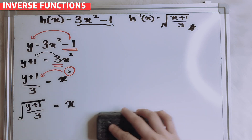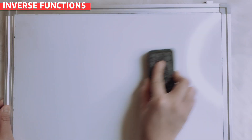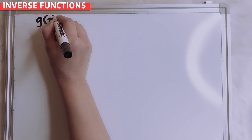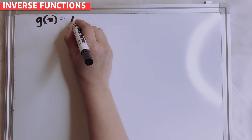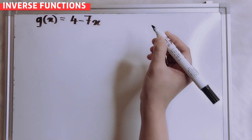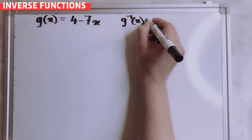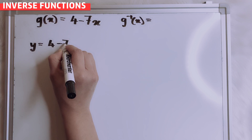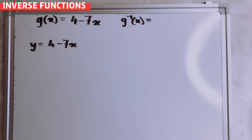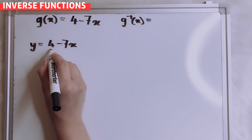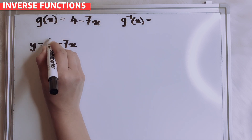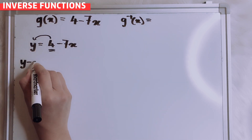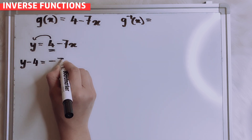So next, let's try a different question. Let's say I give you g(x) equals to 4 minus 7x. So what is our g inverse? So put here y equals to 4 minus 7x. Now, I want to transfer positive 4 to this side, so once I transfer to this side, it will be y minus 4 equals to negative 7x.